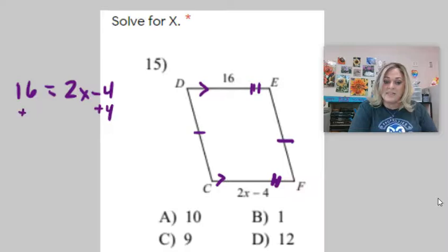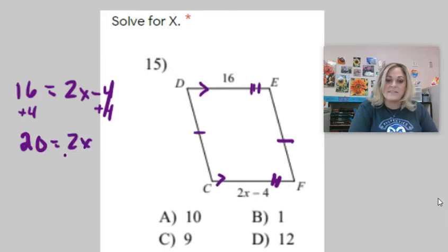Add 4 to both sides. You need to solve for x. So that's a 20 equals 2x. Divide by 2 on both sides, and you should get what x equals.